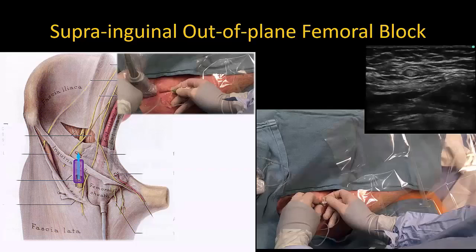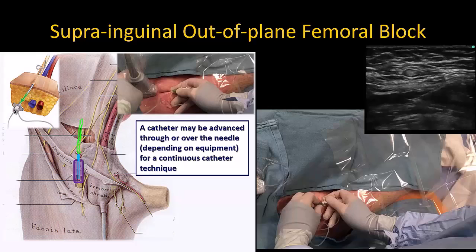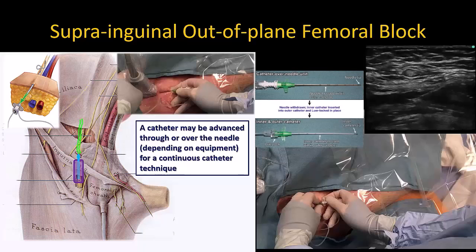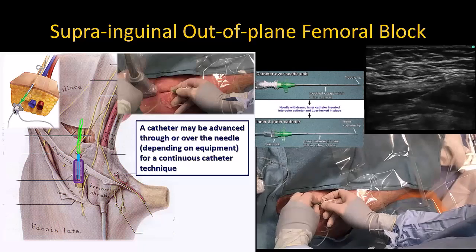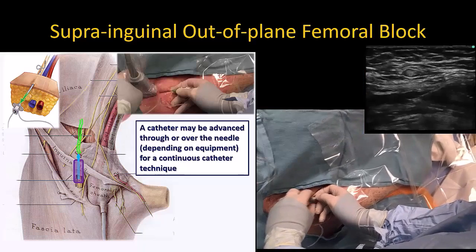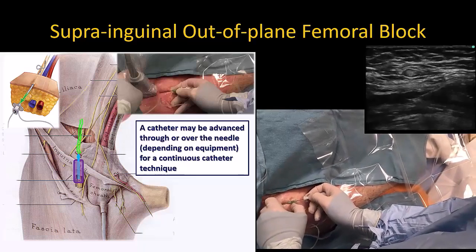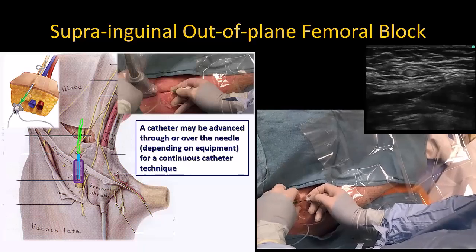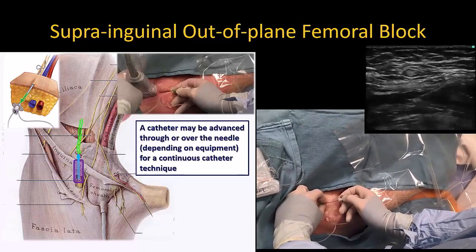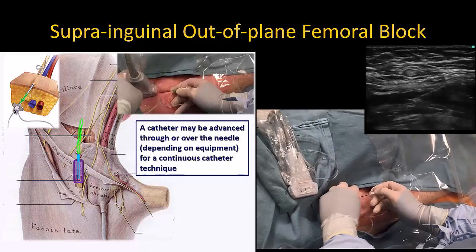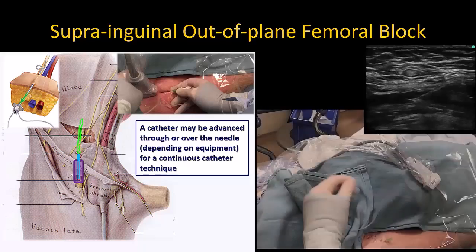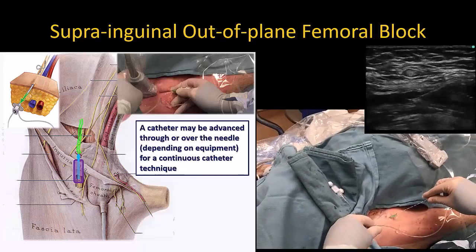A catheter may also be easily placed using this technique. Once the initial loading bolus of local anesthetic has been delivered through the needle, a catheter may be advanced without difficulty 5-6 cm beyond the needle tip. Alternatively, you can use a catheter-over-needle set. I have begun to favor this set as it is almost as simple to perform as a single injection block, and in my experience can be easily done at the bedside in the emergency department or in the ward. With the out-of-plane approach just described, the entire length of catheter can be inserted into the fascia iliaca compartment alongside the nerve, minimizing the risk of malposition and dislodgment.